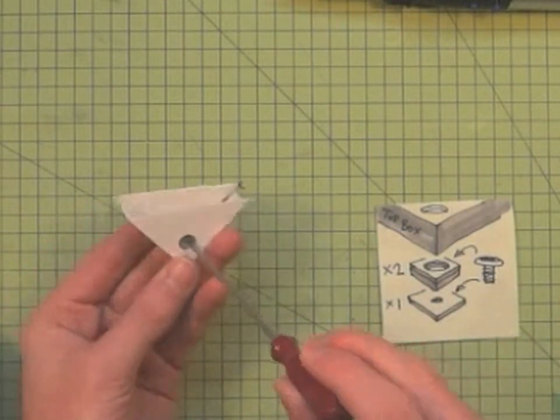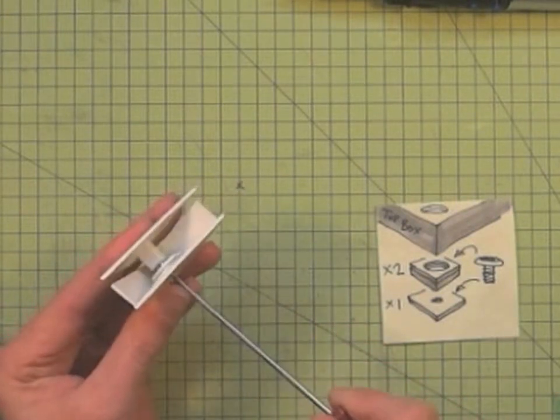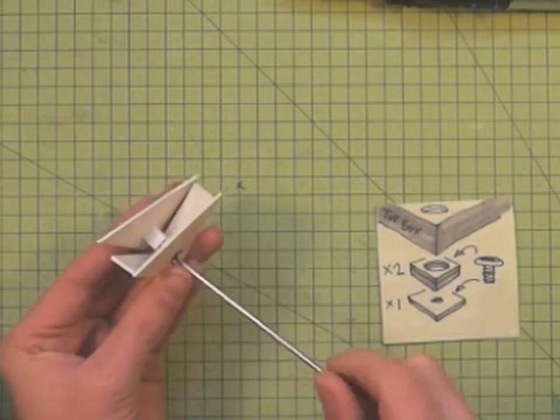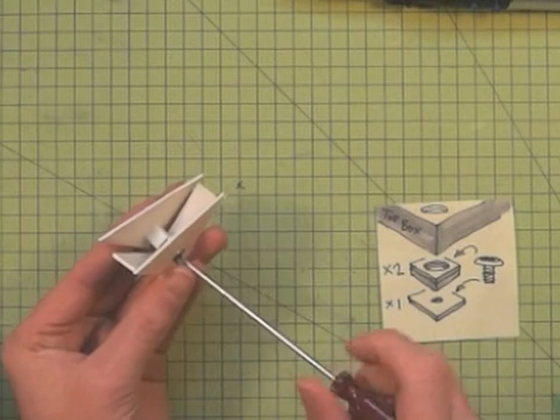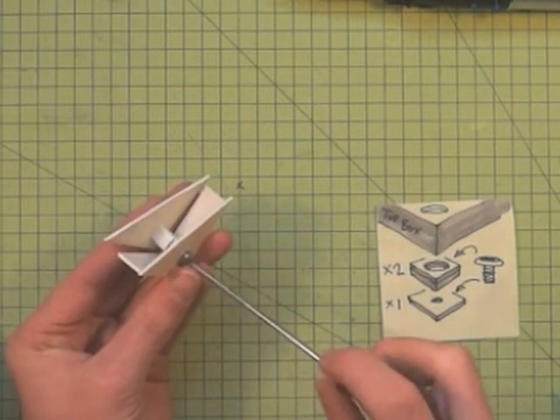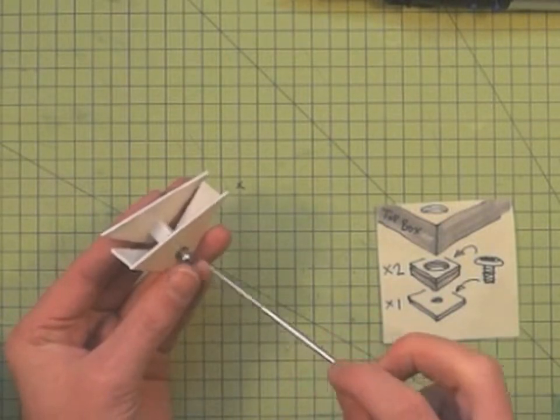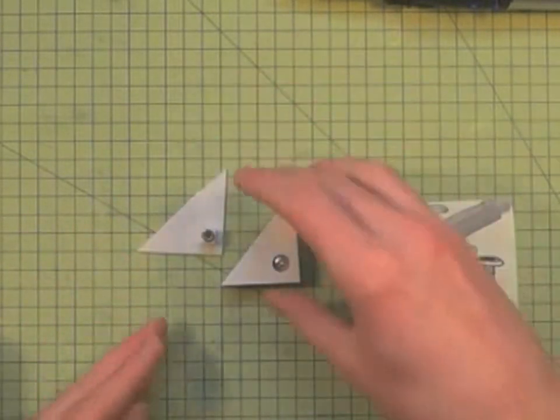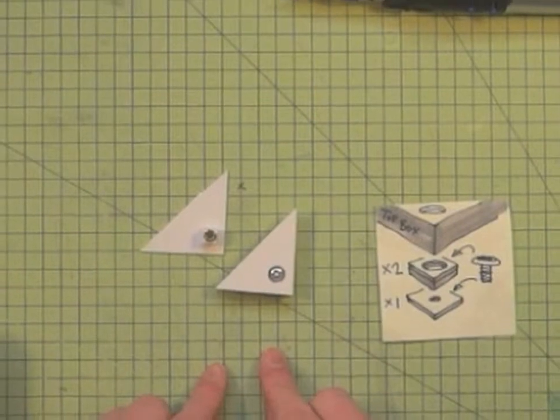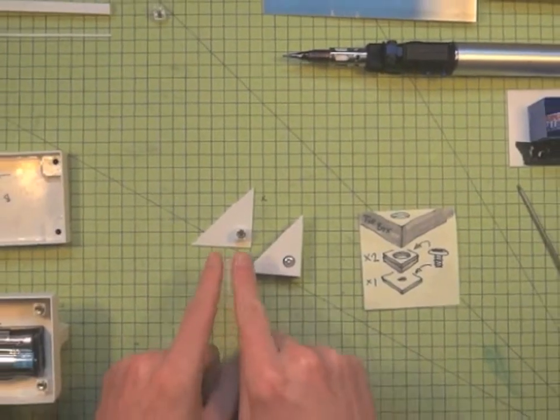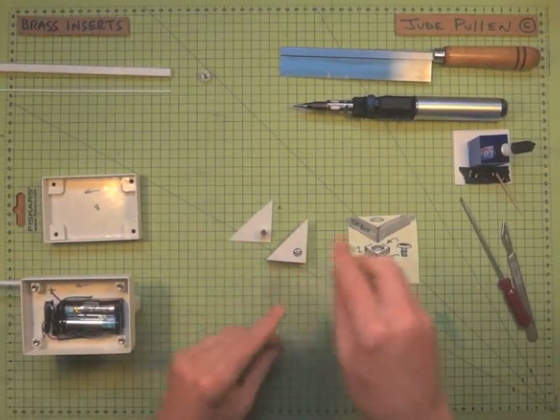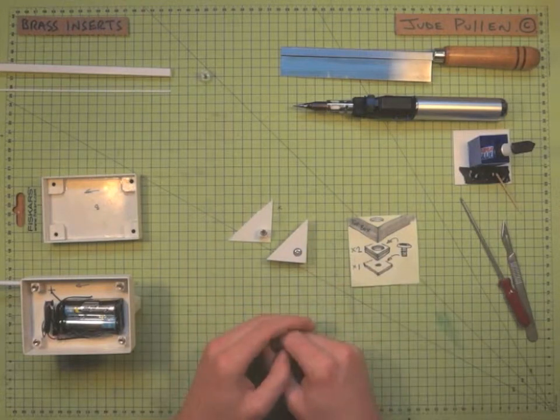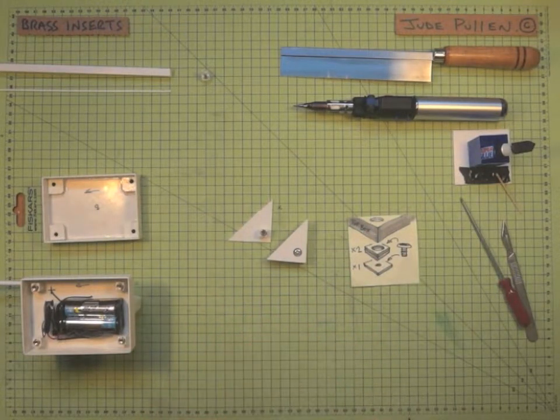So that'll mean that when you come to unscrew your lid, like so, the post will be left in place, like that. And so what that means is that essentially, you've got a really strong mount, and you're able to take apart this as many times as you like, with very little wear. So that's brass inserts.